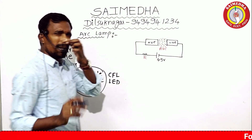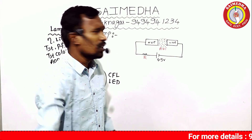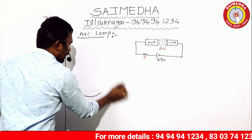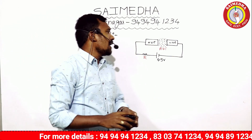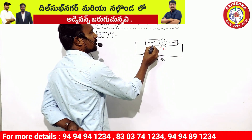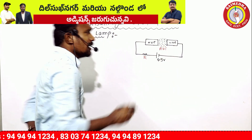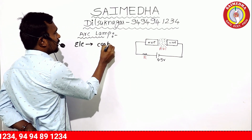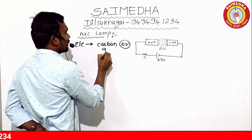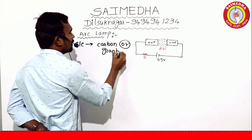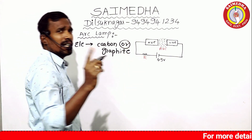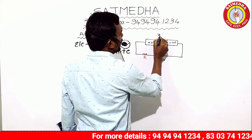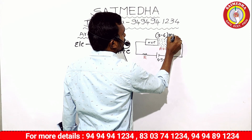Now we have an arc lamp. Briefly, arc lamp — the question. In general, the arc lamp has two electrodes: one is the positive electrode and one is the negative electrode. These electrodes are made of carbon or graphite. The two electrodes are separated by three to six millimeters.